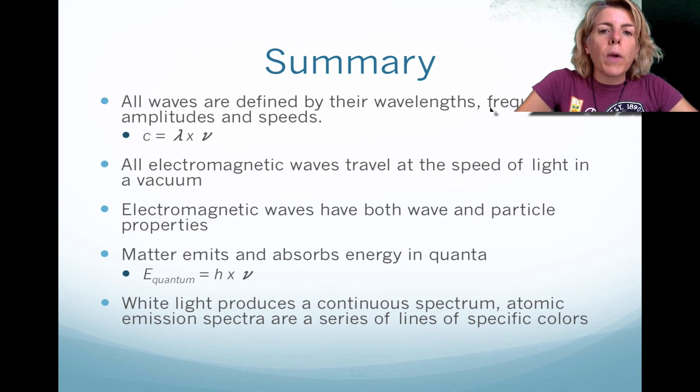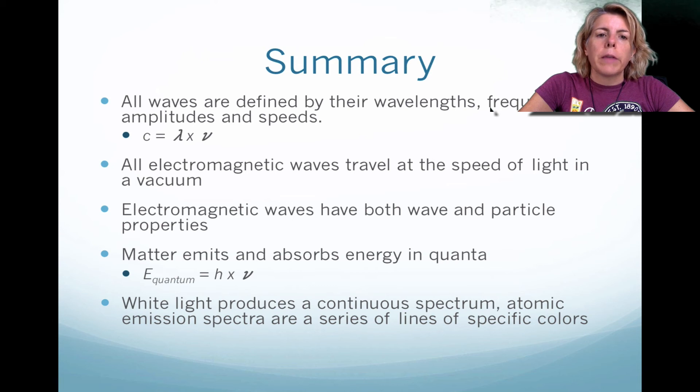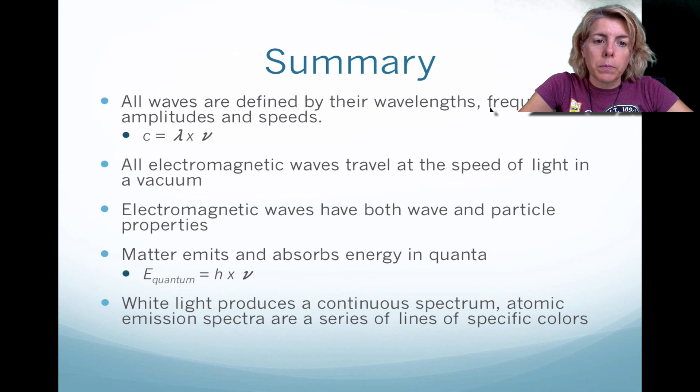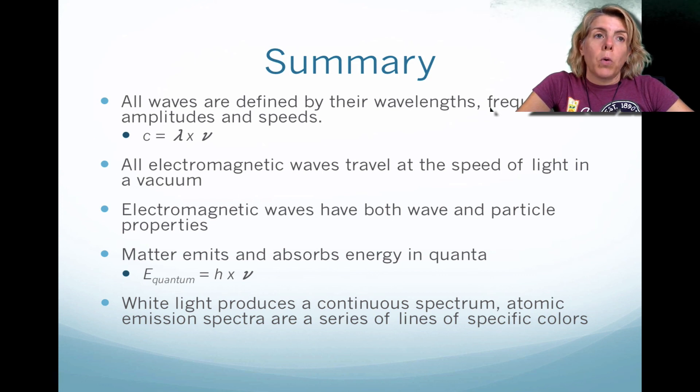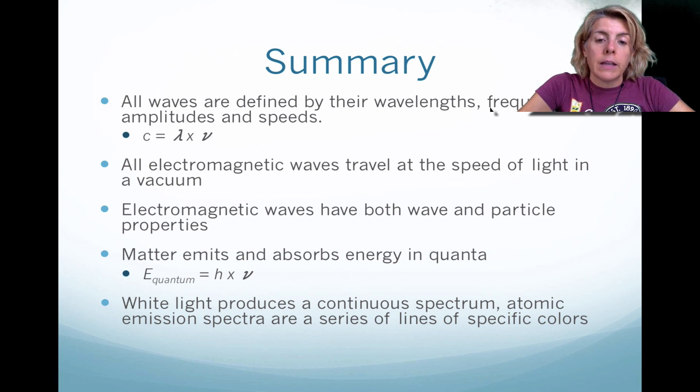Okay, so in summary, all waves are defined by their wavelengths or frequencies with amplitudes and speeds. And please remember that the speed of light is the universe's speed limit. It's as fast as light can go. And we can calculate it using wavelength, which is lambda, and the V, which we call nu, which is frequency. So all waves travel at the same speed in a vacuum. The waves can have both wave-like and particle-like properties. Matter we know. That means elements. They typically emit and absorb energy in packages, or we call them quanta. And we can calculate that by taking Planck's constant times the frequency of that light. And then lastly, white light produces a continuous or rainbow spectrum. Whereas atomic emission only emits certain bands of color.